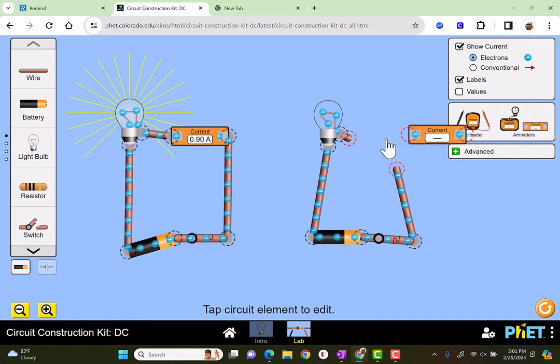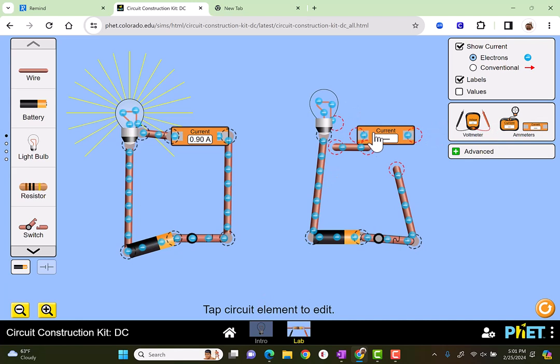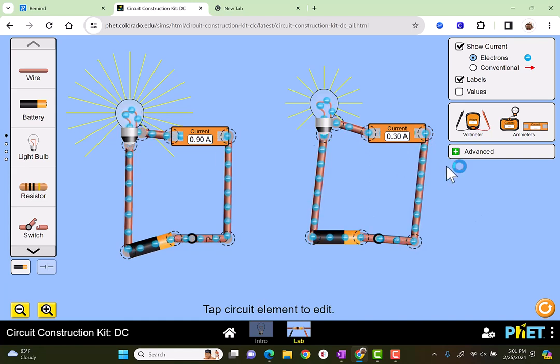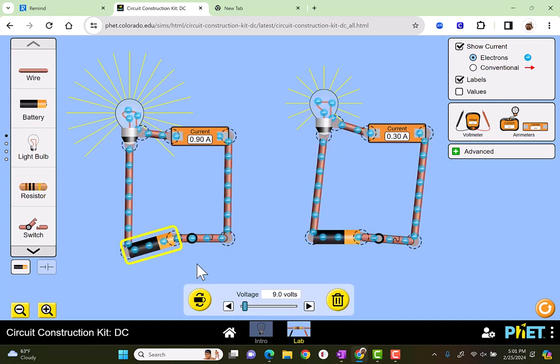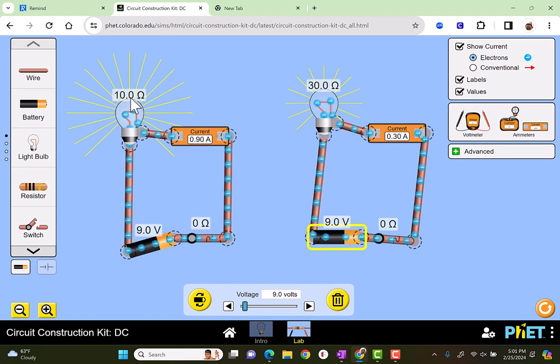So the current here is 0.9 amps. And the current in this other one is 0.3 amps. So there's a difference in current here, and this is why people will often say the more current, the more power. The voltage is the same, both nine volts. Let's plug in these values here. We can see the resistor of the light bulb is 10 ohms, and this one's 30 ohms.